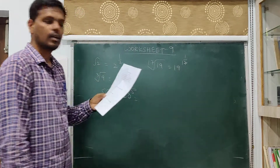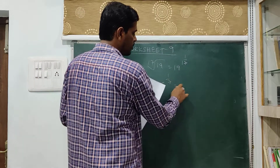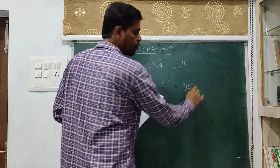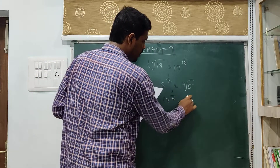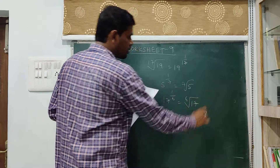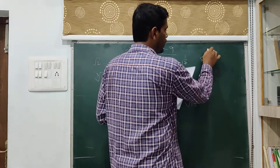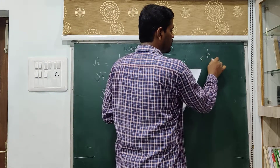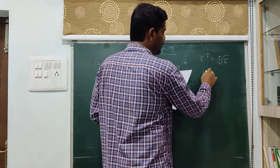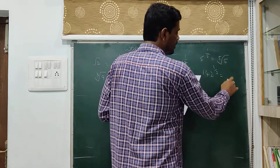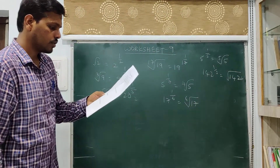Now, write the following in radical form. 5 power 1 by 7 is the same as 7th root of 5. 17 power 1 by 6 is the same as 6th root of 17. 5 power 1 by 5 is the same as 5th root of 5. 142 power 1 by 2 is the same as square root of 142. That is it.